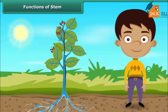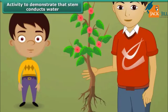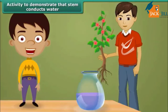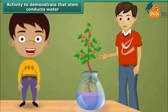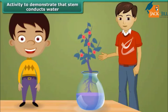Besides, the stem exposes its leaves to the sunlight. Let us perform an activity to demonstrate that the stem conducts water. Take a Balsam plant with roots and put it in a pot containing coloured liquid. After a while, you'll observe the same colour in the stem, leaves, etc. of the plant. This proves that the stem conducts water from the roots to the other parts of the plant body.